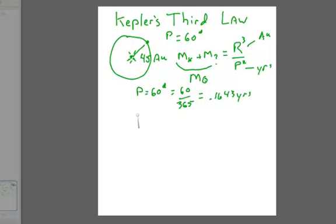So let's go ahead and solve this problem. That means that the mass of the star, mass of the unknown, is going to be equal to 45 AUs. It's going to be cubed. We're going to divide by 0.1643, and that's going to be squared.